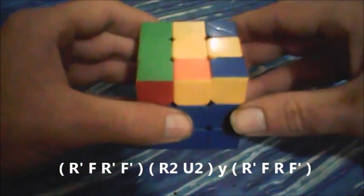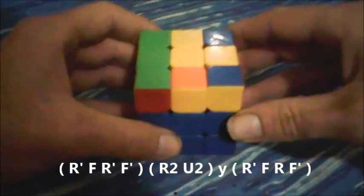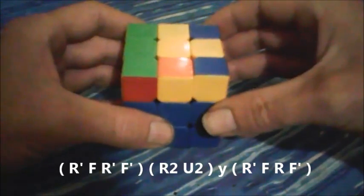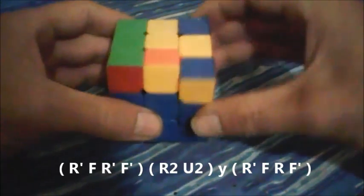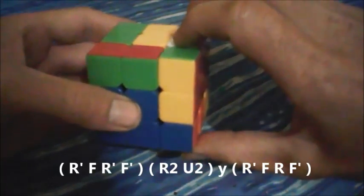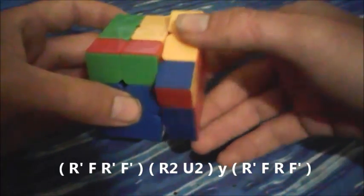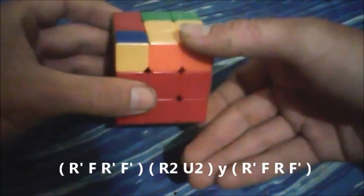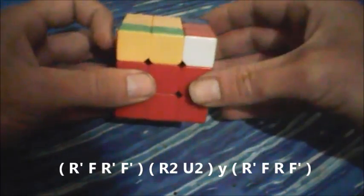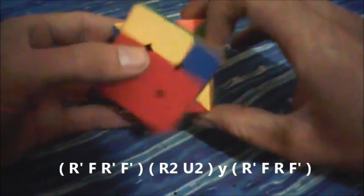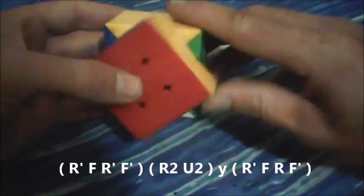So to perform it a little bit quicker, what you need to do is after you do the first section R' F R' F', while you're doing the R2 you turn it, you do the Y as you're doing the U2, then you go into the sledgehammer R' F R F'.